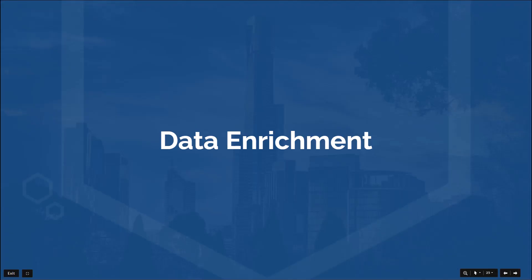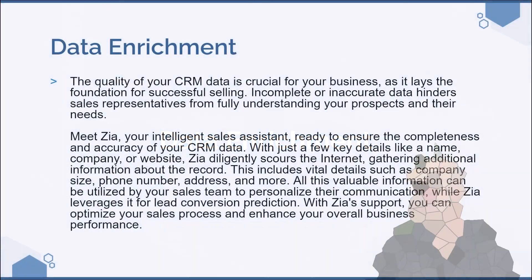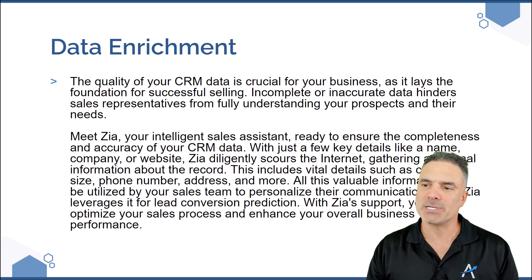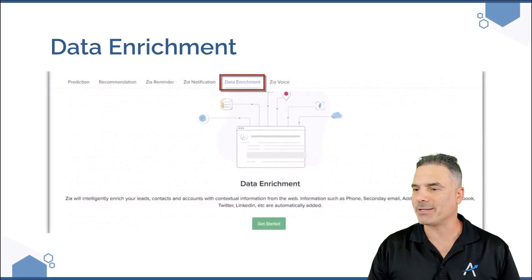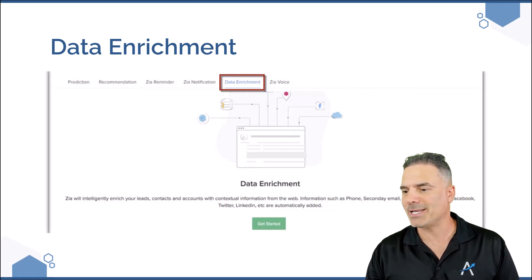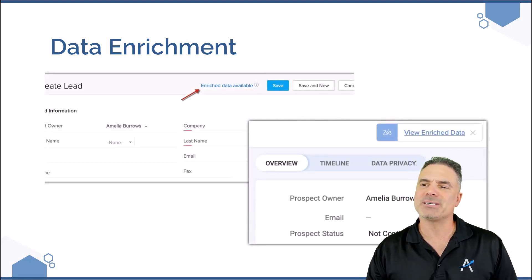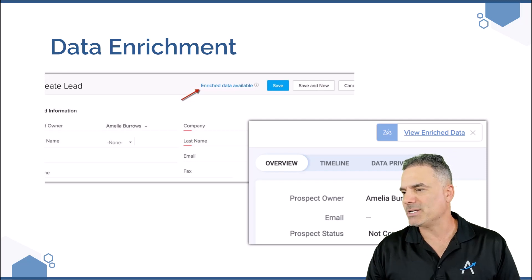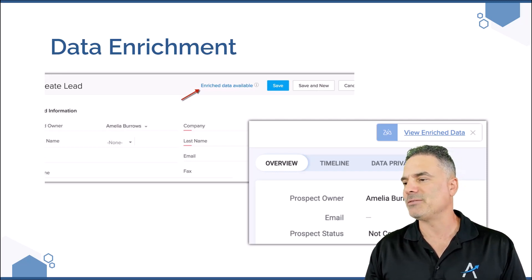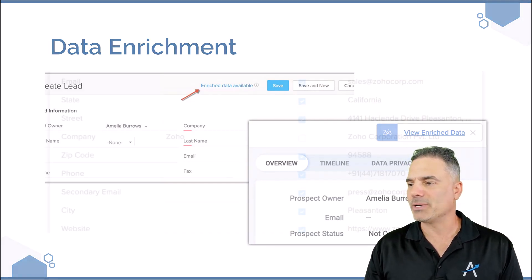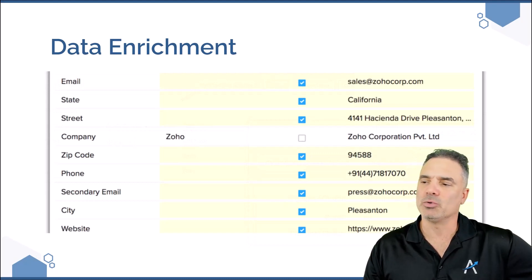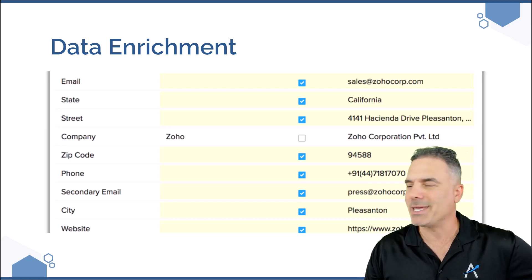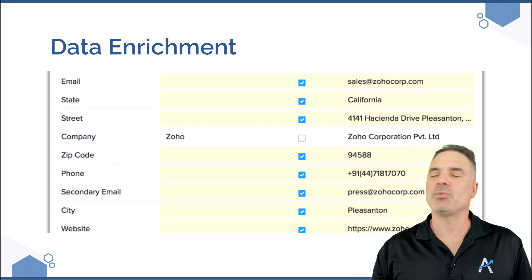Next on the list is data enrichment — it enriches data. Whenever you go to a record such as a contact or account, you will be able to click on enrich data and that will pull information about the person. About 90% of the time the data being enriched is actually correct. To configure data enrichment, go to ZIA, click on data enrichment, and click get started. When activated, you will have a button on the top of the lead or contact record saying data available or view enriched data. If you click on it, it will show you the data pulled based on the details in the system — most of the time the email, company name, and so on — and if you save it, the data will be saved into the record.